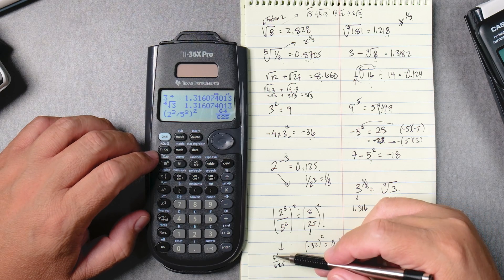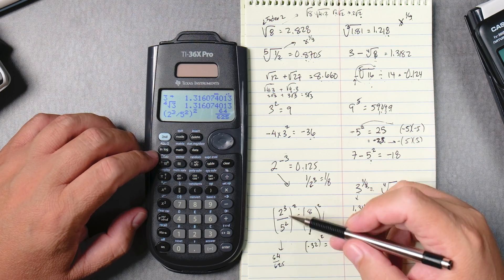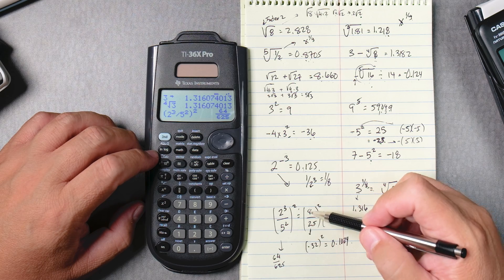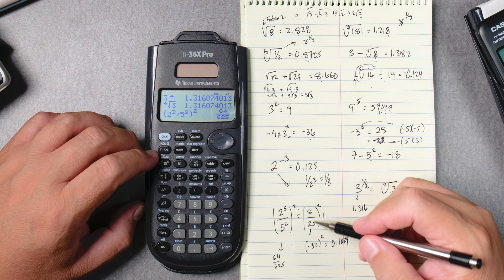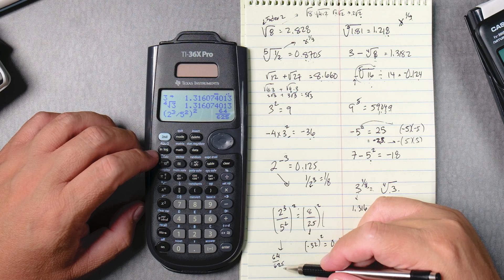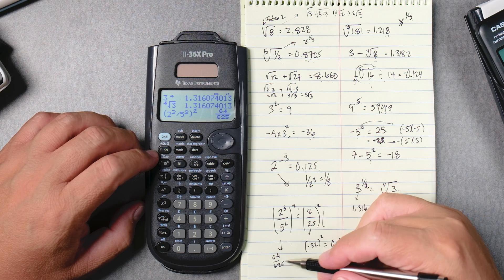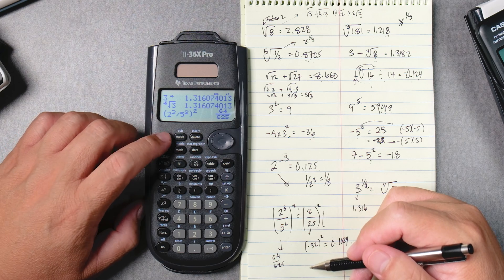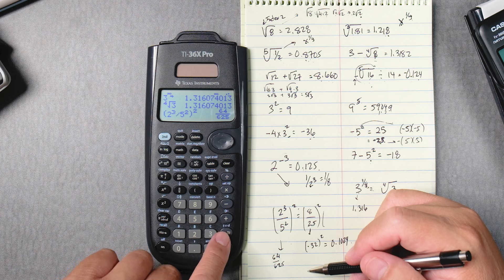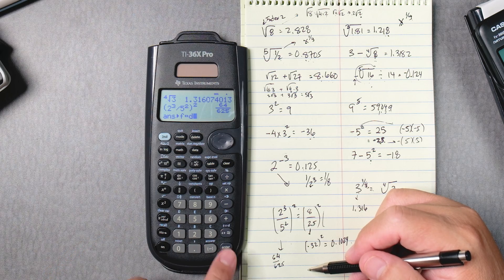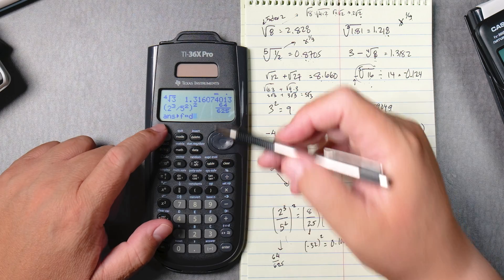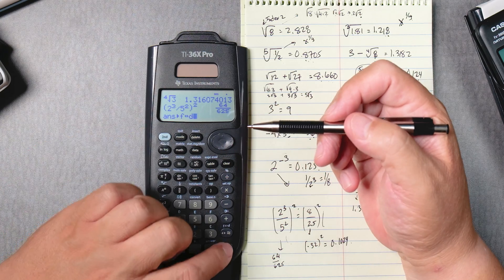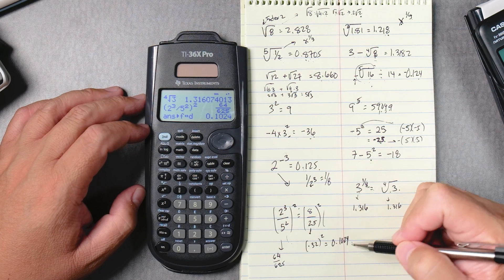It gives you a fraction, 64 over 625. Why? 2 to the 3rd is 8, 5 squared is 25, but there's a square. 8 squared, 64. 25 squared, 625. Now I want 64 over 625, which is reduced. I want it as a decimal. Second, almost equal button. So it's taking the last answer and it's changing it from a fraction to a decimal. Enter. 0.1024.